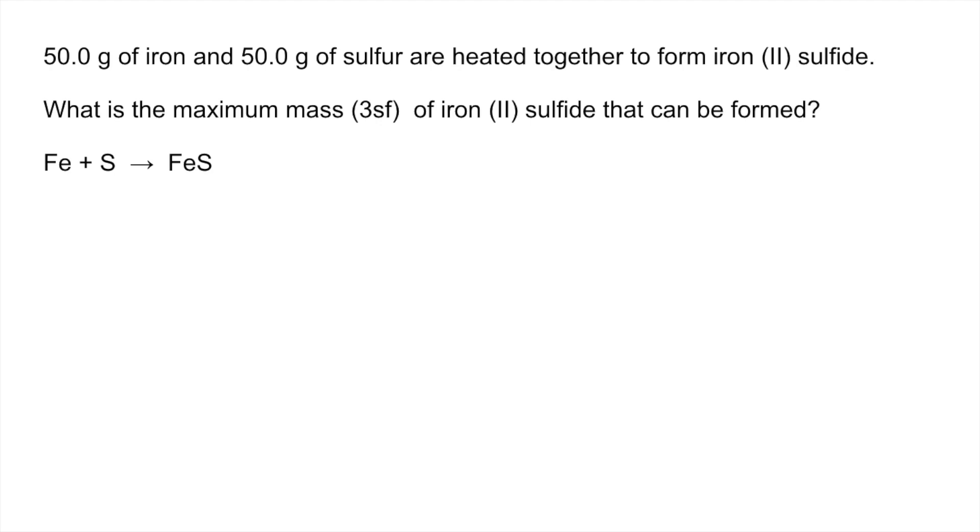Okay, so the first thing I'm going to do is work out the moles of iron and the moles of sulfur that we've got. So moles of iron: mass over MR, 50 over 55.8 equals 0.896. Likewise for sulfur, 50 over 32.1 gives us 1.56 moles of sulfur.